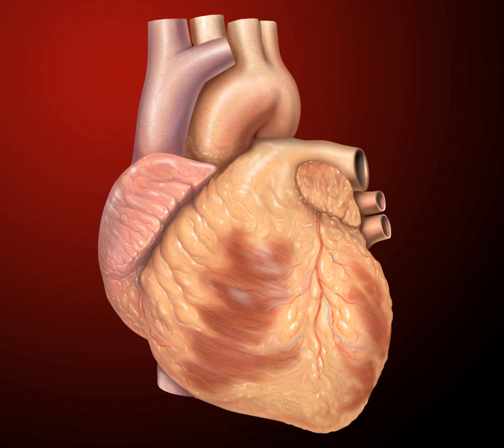The right heart collects deoxygenated blood from two large veins, the superior and inferior venae cavae. Blood collects in the right and left atrium continuously. The superior vena cava drains blood from above the diaphragm and empties into the upper back part of the atrium below the opening for the superior vena cava.